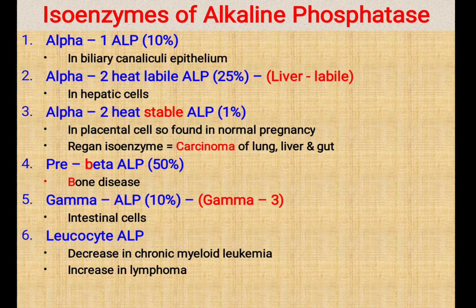Therefore, ALP is not a very specific investigation for obstructive jaundice, but it does have an important role in its diagnosis. If other investigations are supportive, then you can conclude about obstructive jaundice — ALP is just supportive. Remember, 50% of ALP is produced by bone tissue, so its level is increased in bone diseases. All isoenzymes are clinically important, and knowing ALP with its isoenzymes will be very helpful in clinical practice.